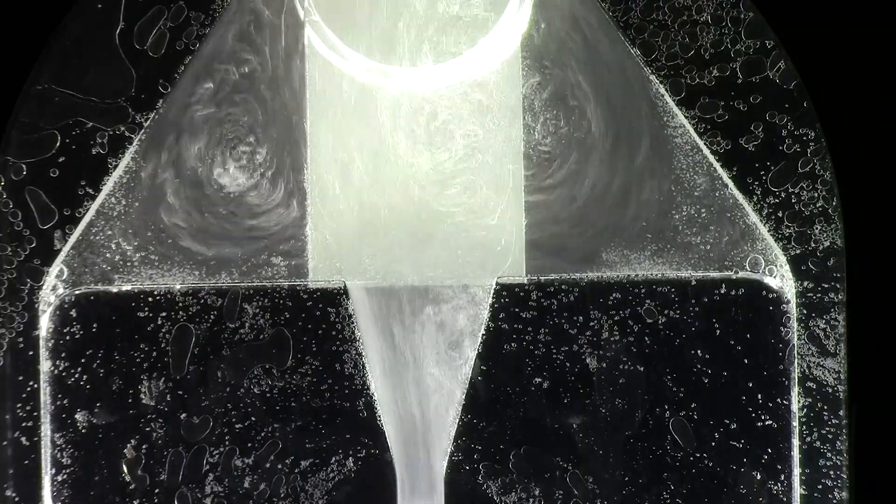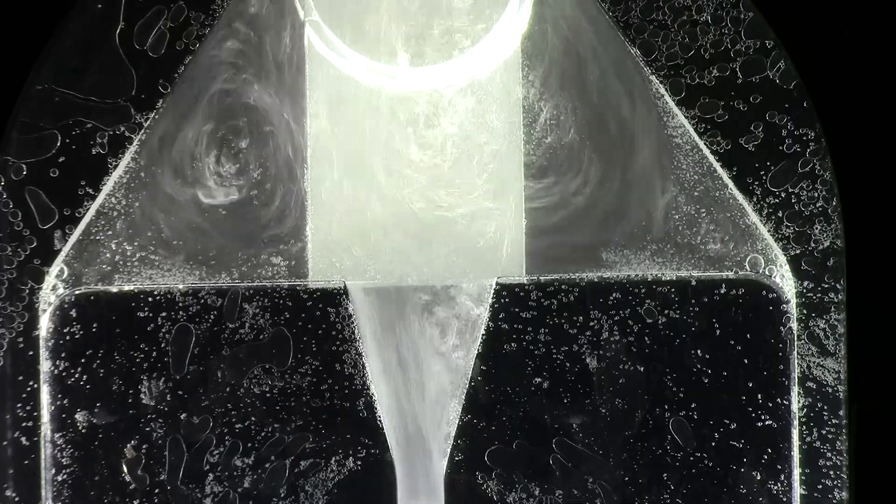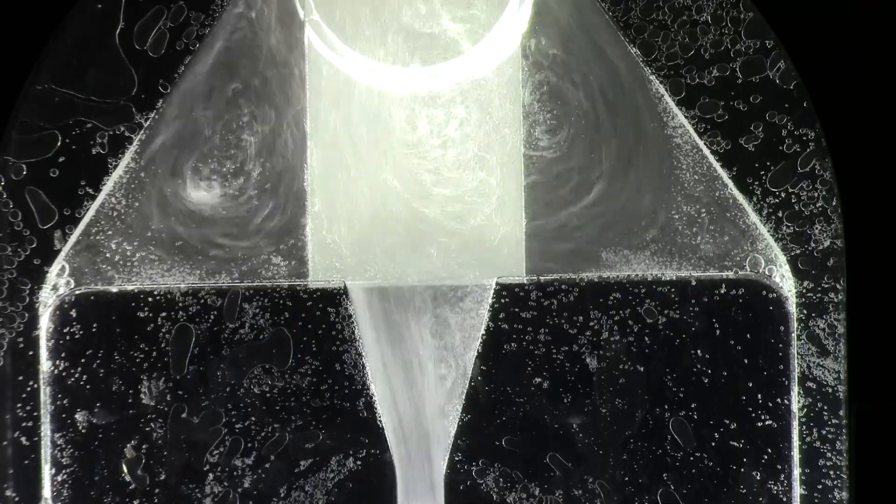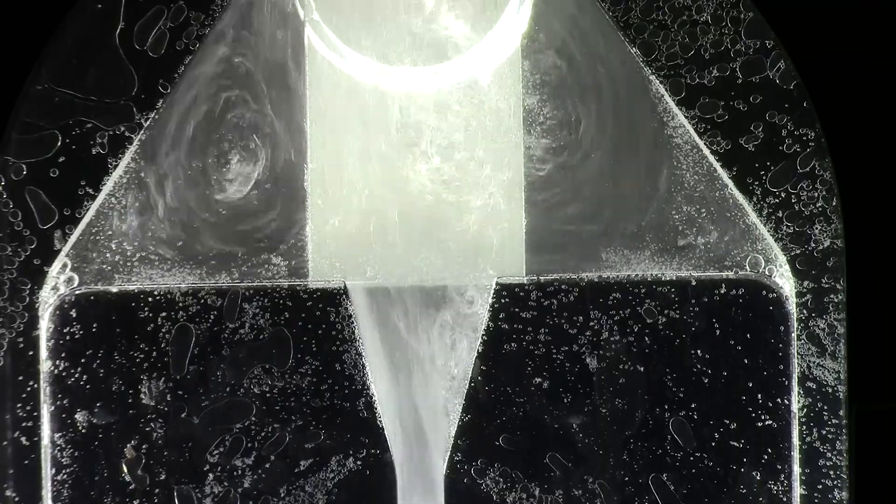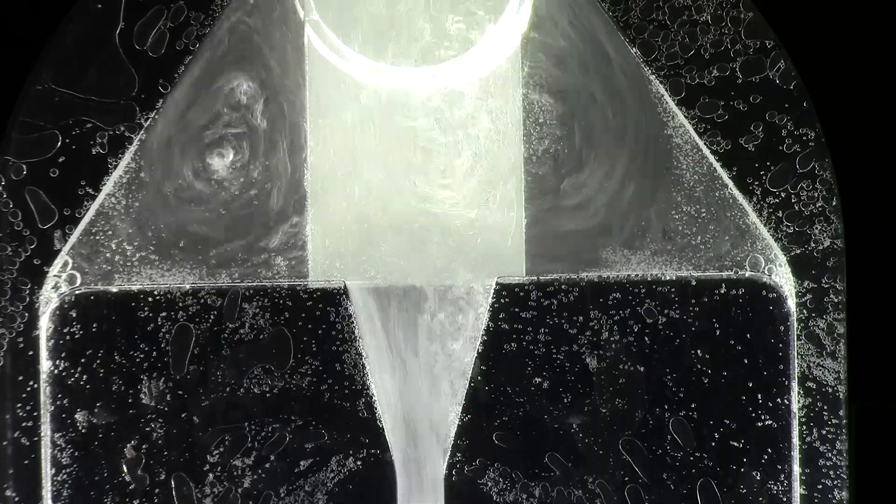So once the flow detaches from one of the walls due to adverse pressure, it forms a circulation region. In this circulation region, the flow velocity is low, and according to Bernoulli's equation, the pressure is high.